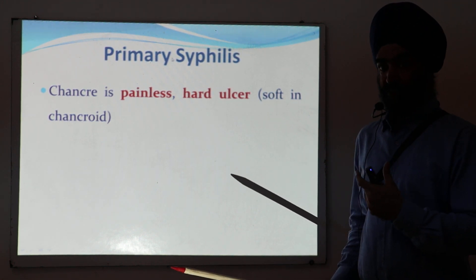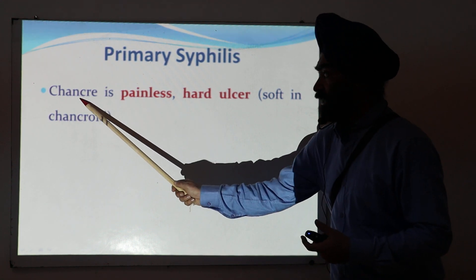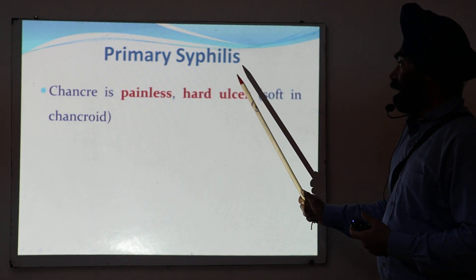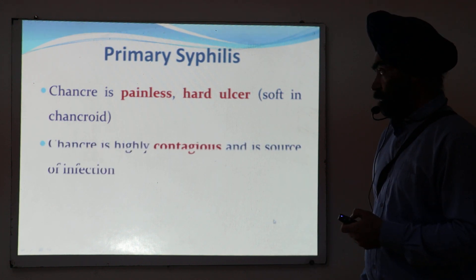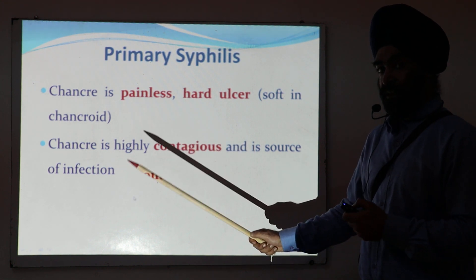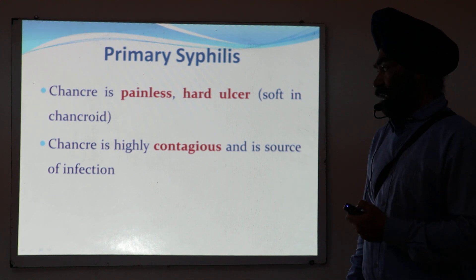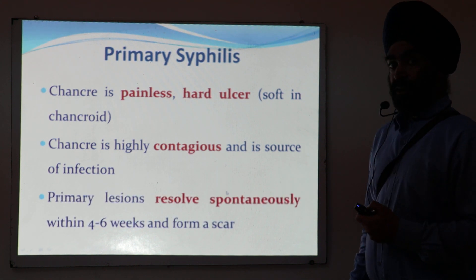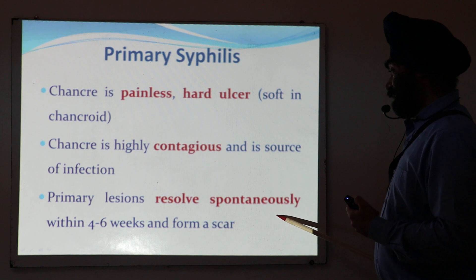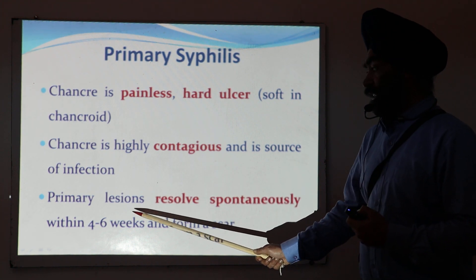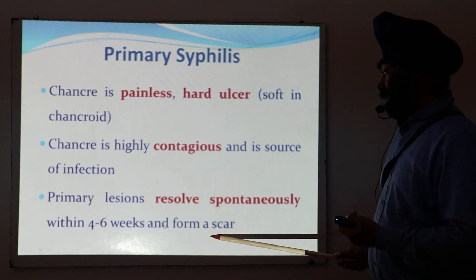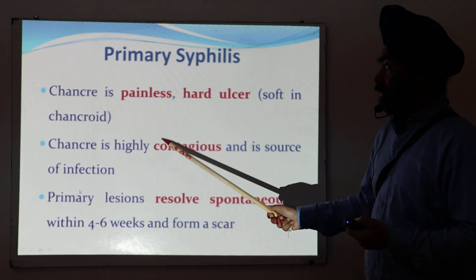It is important to differentiate this from the chancre in chancroid disease, where the chancre is soft in nature, while in syphilis it is hard. The chancre is contagious and a source of infection. Importantly, even without treatment, the symptoms resolve spontaneously — the ulcers heal within four to six weeks, approximately one to two months — leaving a scar at that site.